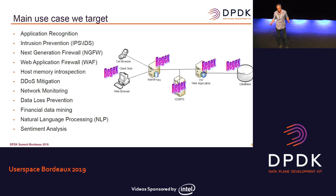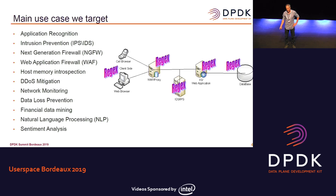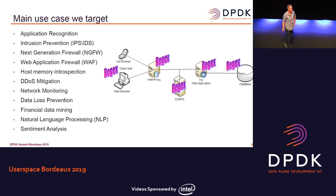All these are combined into what's called next-generation firewall, which has different names in the industry, with various companies providing solutions along the path, including web application firewall. Another interesting use case is host memory inspection: if you're a hypervisor offering a VM, you can scan memory to detect intrusions, viruses, or similar threats — not network-related, which is different from much of what we do in DPDK.